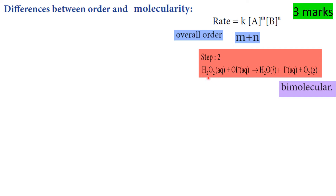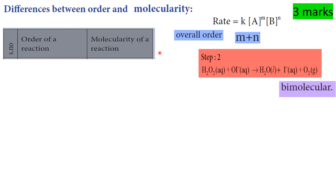Molecularity is the total number of molecules involved in a reaction step. For example, one molecule is unimolecular and two molecules is bimolecular. You can use a table column to compare the order of the reaction and the molecularity of the reaction.